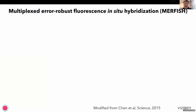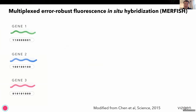MERFISH breaks that limitation and enables massively multiplexed RNA-FISH imaging at the same time. This technology comes from Dr. Xiaowei Zhuang's lab at Harvard University, first described in Science back in 2015. Since it's an imaging-based technology, the first thing we do is assign error-robust binary barcodes to different genes of interest.